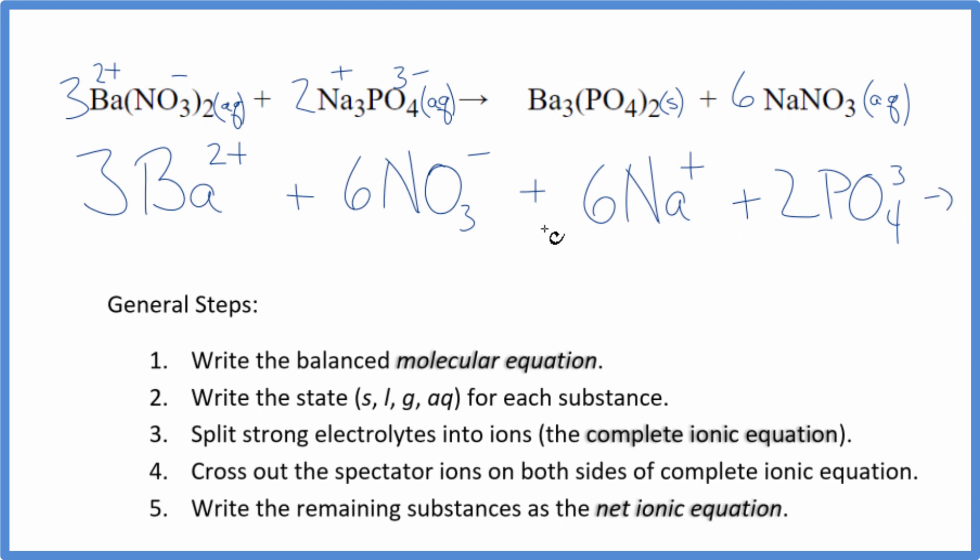So we have our reactants in the products for a net ionic equation. We don't split solids apart. So we're just going to call this barium phosphate. And we'll keep this all together since it's a solid. We have plus and minus here. So we have 6 sodium ions. Just like we had in the reactants. And we have 6 of these nitrate ions. Also like the reactants.